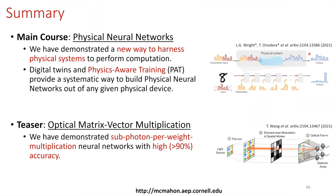To recap: the main part of the talk covered construction of physical neural networks using a physics-aware training protocol that lets you build deep neural networks from layers of physical systems, demonstrated on three different physical systems. I also gave a teaser on our optical matrix-vector multiplication work, where we achieved high accuracy using less than a single photon per weight multiplication. Thank you again for the invitation to speak, and I look forward to questions.